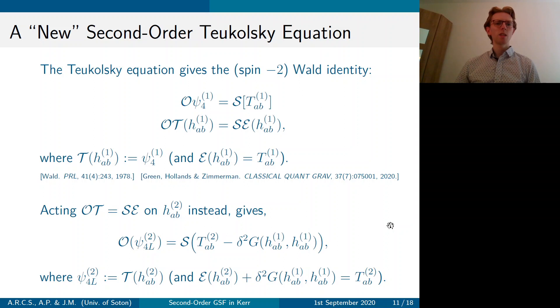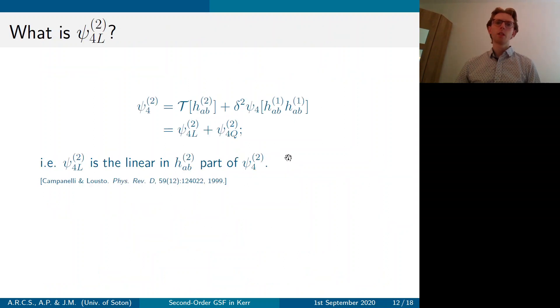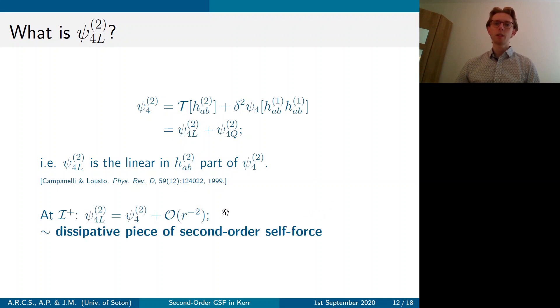But first, what is psi 4 L2? Now this actually came up in Campanelli and Lousto and they talked about how psi 4 2 is made up of a linear in H2 piece and a quadratic in H1 piece. And psi 4 L2 is simply the linear in H2 piece. Now usefully, at leading order, at future null infinity,